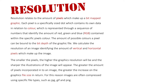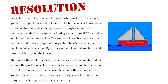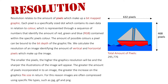We calculate the resolution of an image by identifying the amount of vertical and horizontal pixels which make up the image. Looking at an example image, this is a pretty low-res image — it doesn't have lots of pixels and you can see a bit of jitteriness in its lines. Its actual resolution is 632 horizontal pixels by 468 vertical pixels. If we multiply them by each other, that gives us a total of 295,776 pixels.